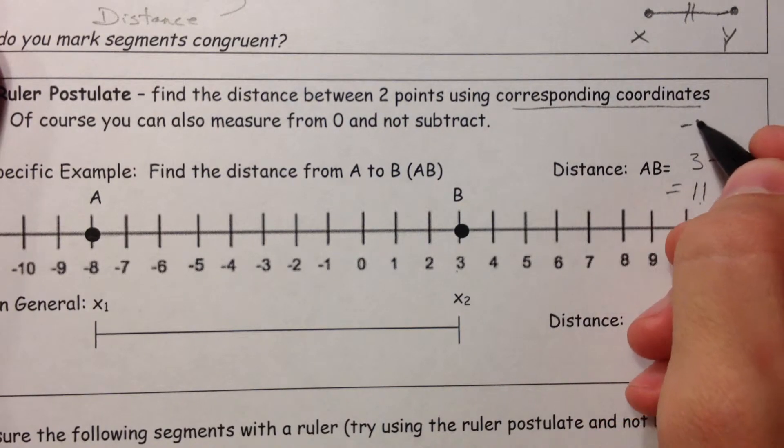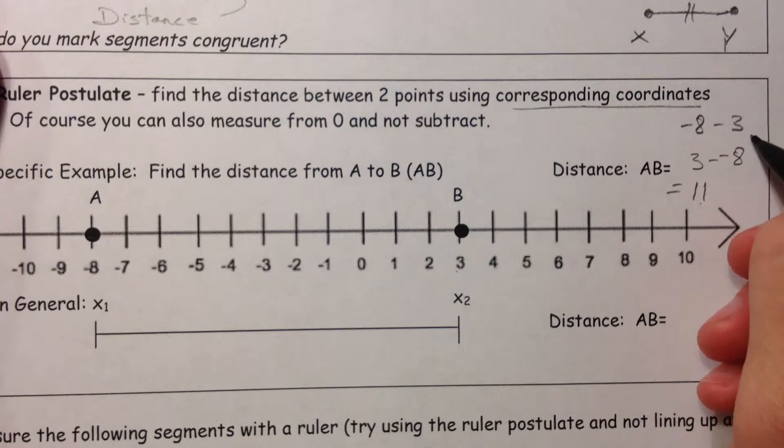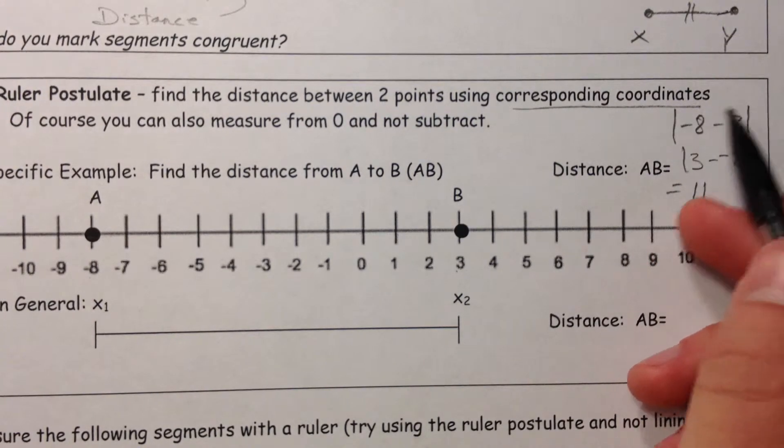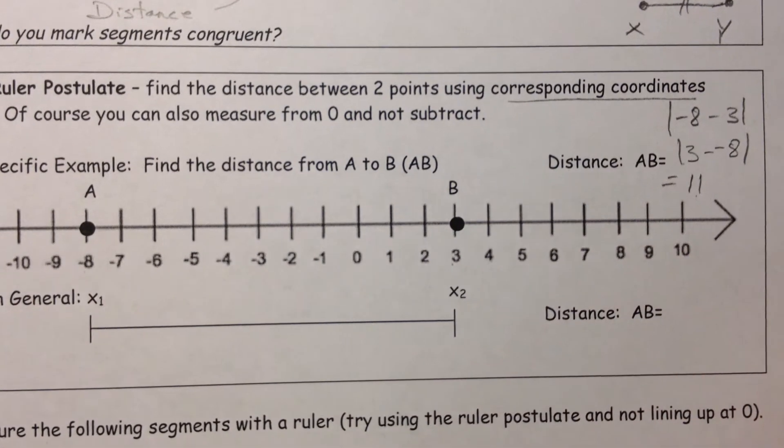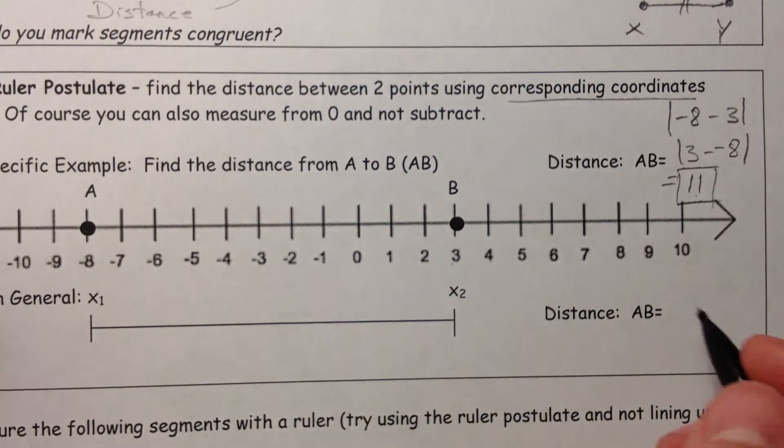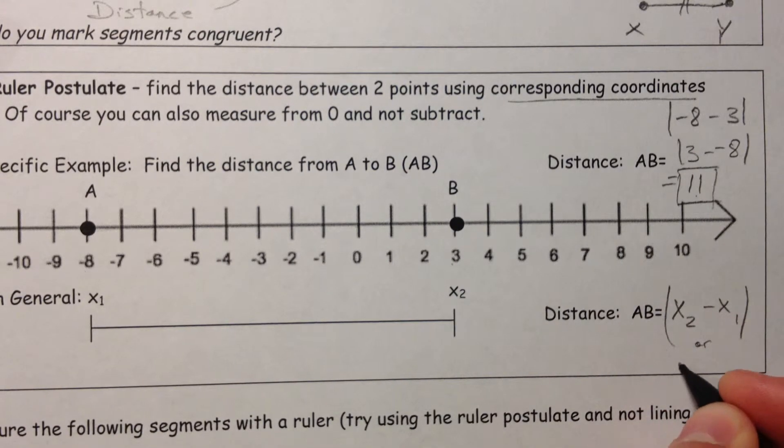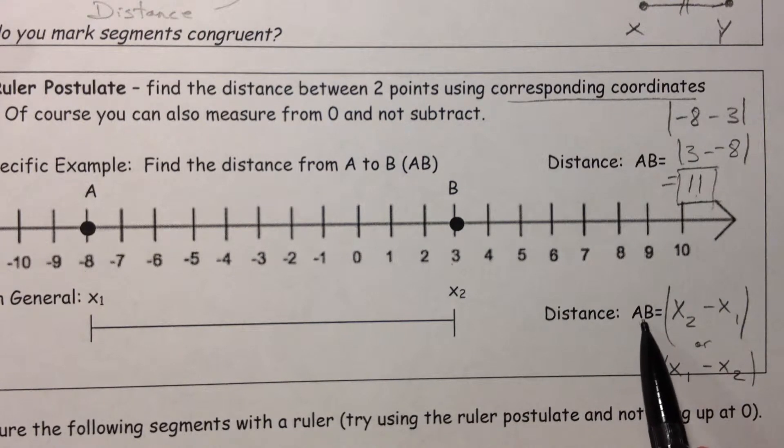You could also have done negative 8 minus 3, but the only problem there is you get negative 11. And so one thing we're going to talk about is we're going to put absolute values around that. Hopefully you've seen absolute value bars before. All that means is you're talking about the distance, so you're going to make it positive. So that distance is 11. And so the ruler postulate says you can take x2 and subtract x1, or you can do it the other way around. It doesn't matter. Because we're taking the absolute value of it, and that equals the distance. Notice again, we're not putting the bar across it because it represents the distance.